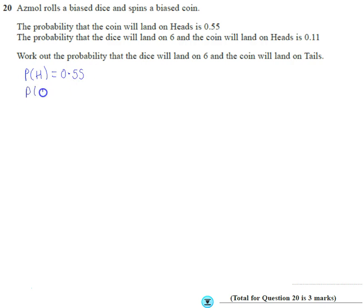So therefore, the probability of getting a tail, because there are only two options on the coin, is going to be 0.45.